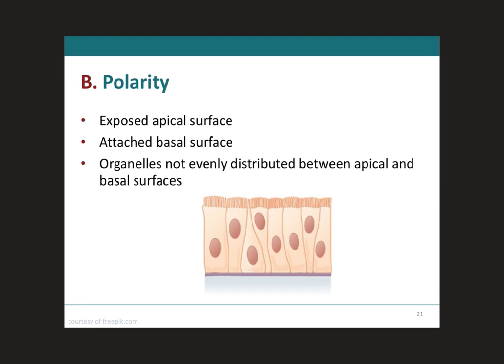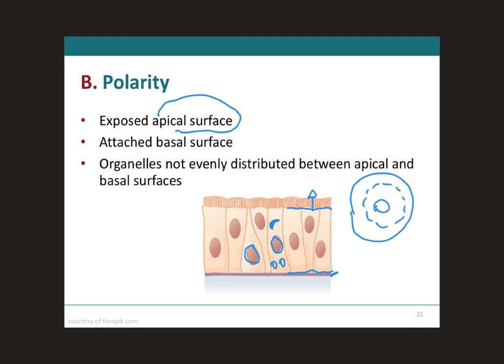Next, we have polarity. Polarity in epithelial tissue doesn't refer to electrical charges — rather, it means that the apical part of the cell is going to be exposed to the surface or to the lumen of an organ, while the basal surface is attached to the basal lamina. This also means that the organelles within the cell are not going to be distributed evenly: usually the nucleus is further down, the Golgi complex is up higher, and the mitochondria are below. Polarity means that organelles are spread unevenly within the cell.